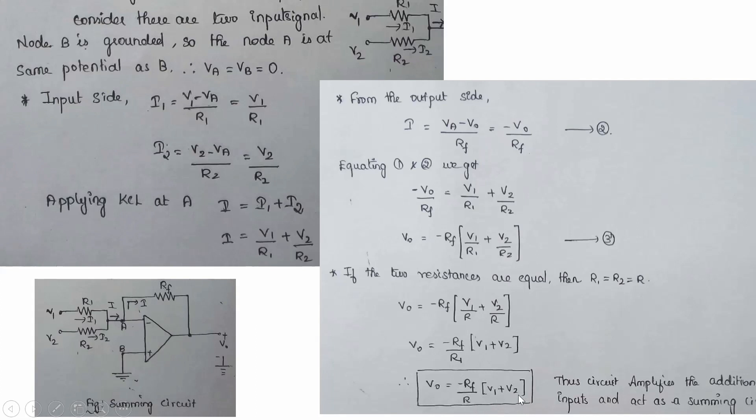When all resistances are equal (R1 = R2 = Rf), we get the addition of the two input voltages with a 180-degree phase shift: Vo = −(V1 + V2). The output voltage varies based on resistance values, but the concept is that the output is the addition of input voltages, and Rf/R represents the gain.